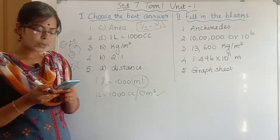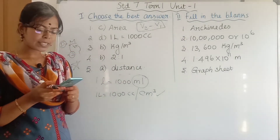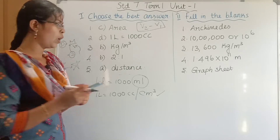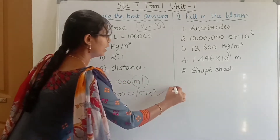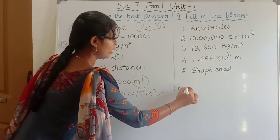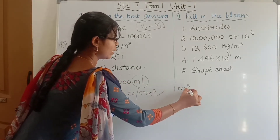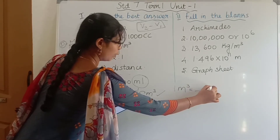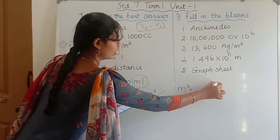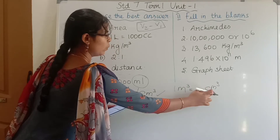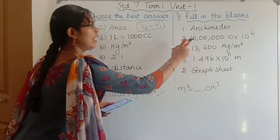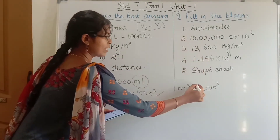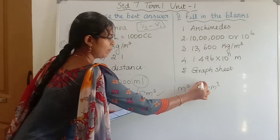Second question: 1 cubic metre is equal to how many cubic centimetres? 1 metre cube is equal to 10 lakh, or 10 power 6, centimetre cube.